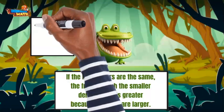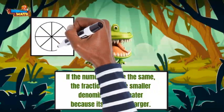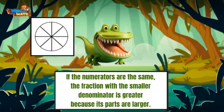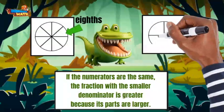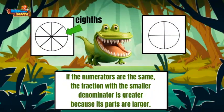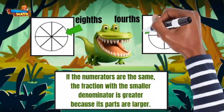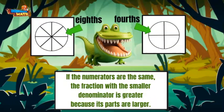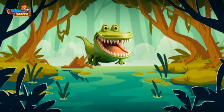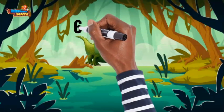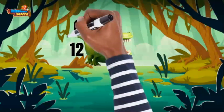These pictures will help. The first picture shows eighths, the second shows fourths. The parts in the circle divided into fourths are larger than the parts in the circle divided into eighths. I spy some more fractions now: six-twelfths and six-eighths.